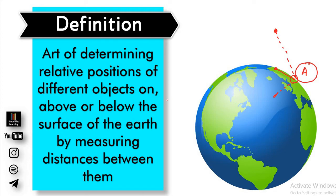The distances measured can be horizontal and vertical. Specifically, when we talk about vertical distances, we are talking about leveling, which is the measurement of elevation — that is, measurement of vertical distances.